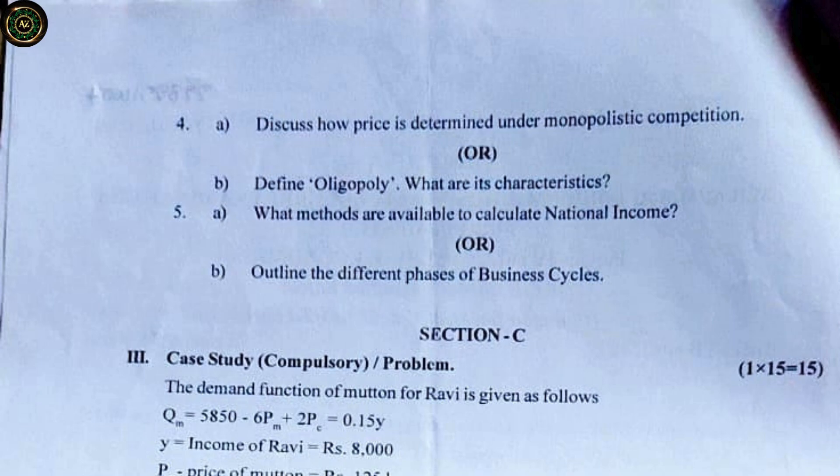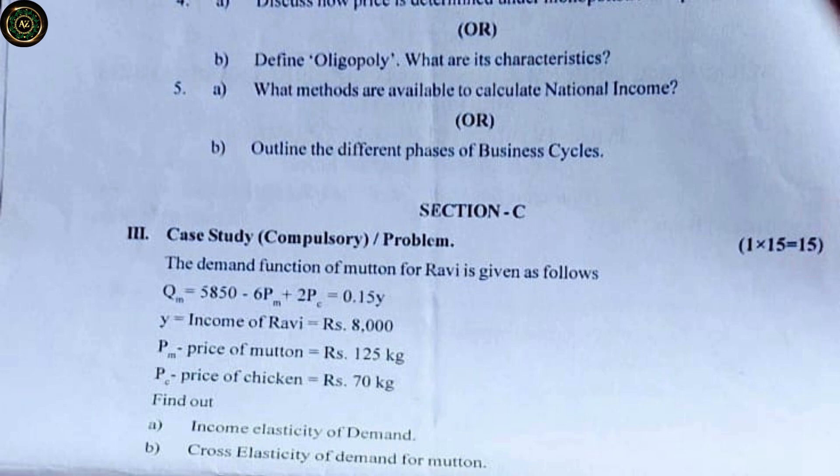Question 5: (a) What methods are available to calculate national income? OR (b) Outline the different phases of business cycles. Section C: Case study — compulsory problem. The demand function of mutton for Ravi is given as follows: